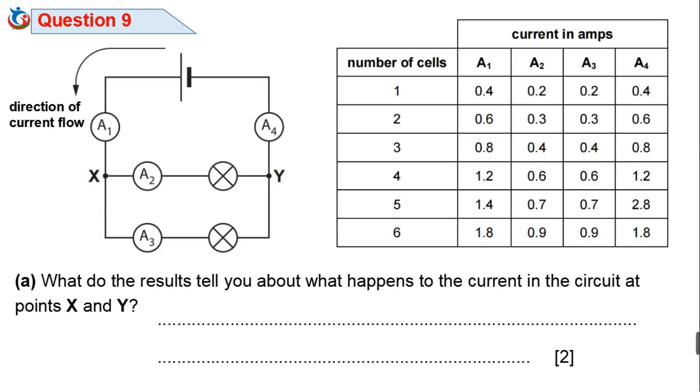Question 9a. What do the results tell you about what happens to the current in the circuit at point X and Y? First of all, take note of the direction of flow of electrons in the electric circuit. You will observe that the current splits at point X and the current rejoins at point Y.